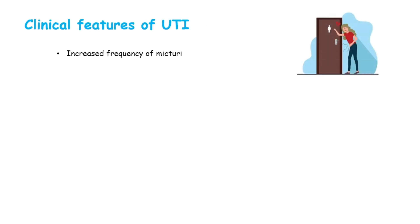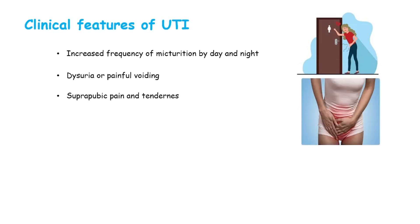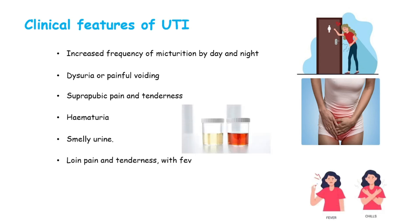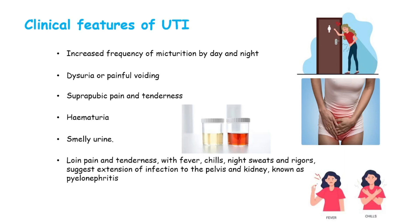Clinical features of UTI include increased frequency of micturition by day and night, dysuria or painful voiding, suprapubic pain and tenderness, hematuria, and smelly urine. Loin pain and tenderness with fever, chills, night sweats, and rigors suggest extension of infection to the pelvis and kidney, known as pyelonephritis.